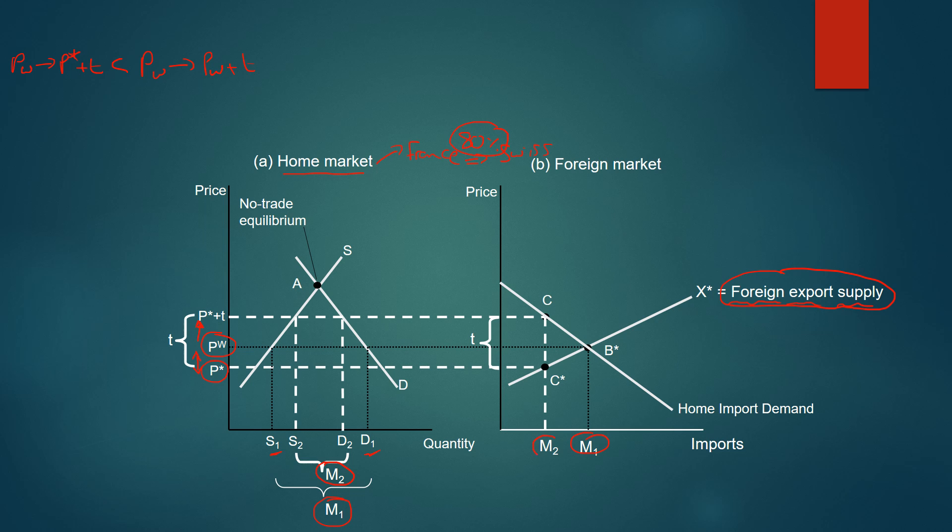Hence, therefore, the foreign market, Switzerland, is now exporting a lower amount to France, M2. So they've essentially forced down the price for those producers.